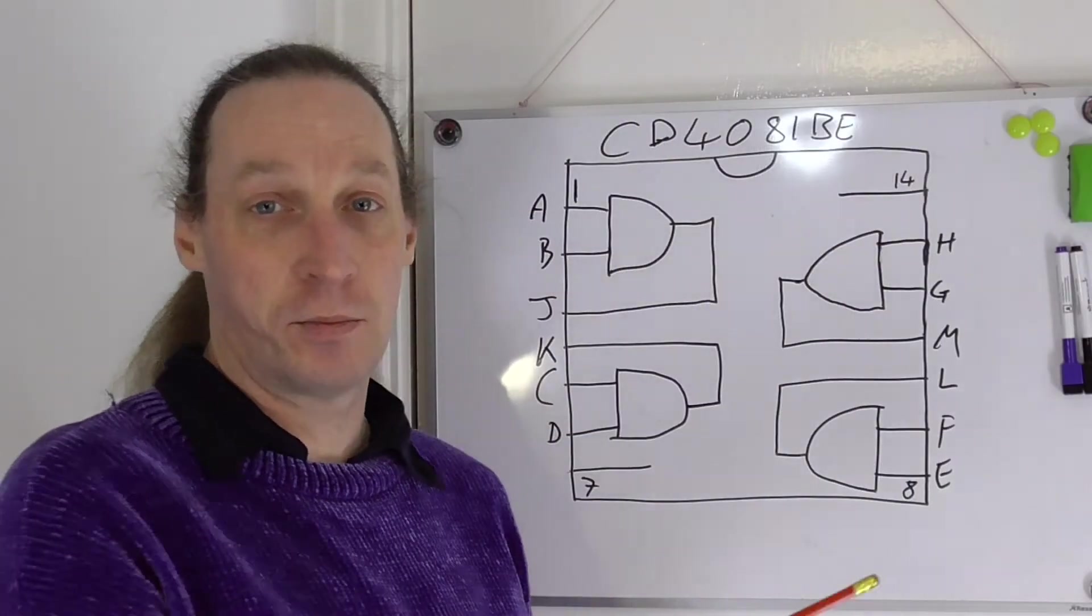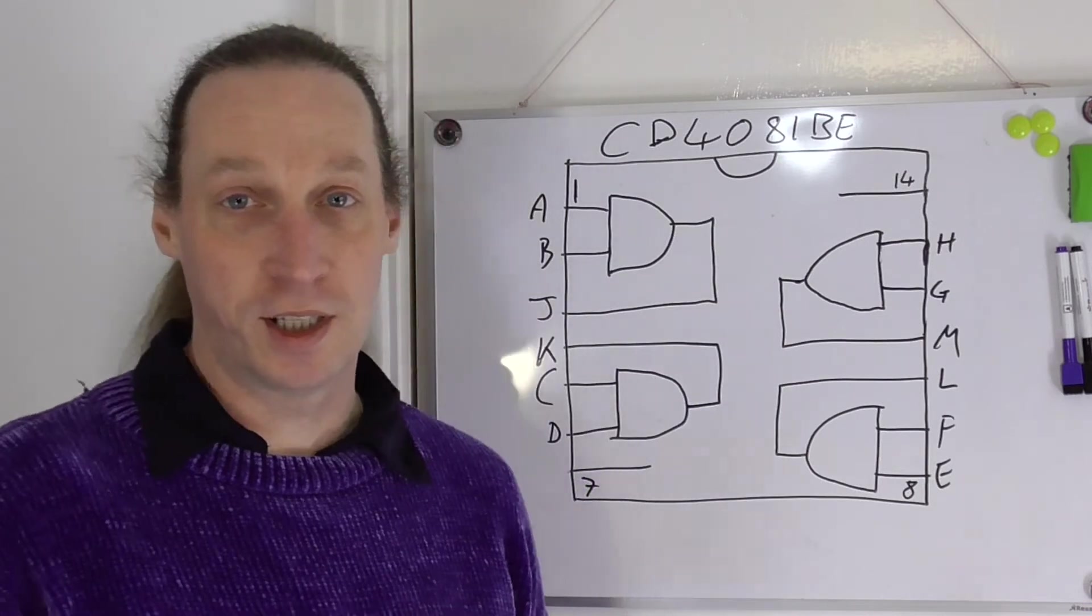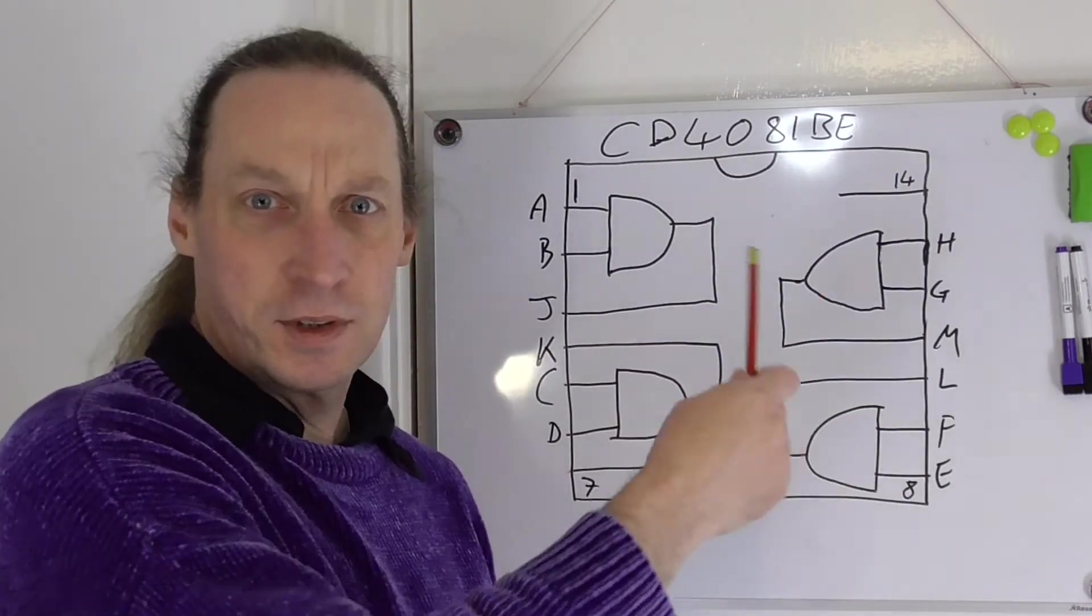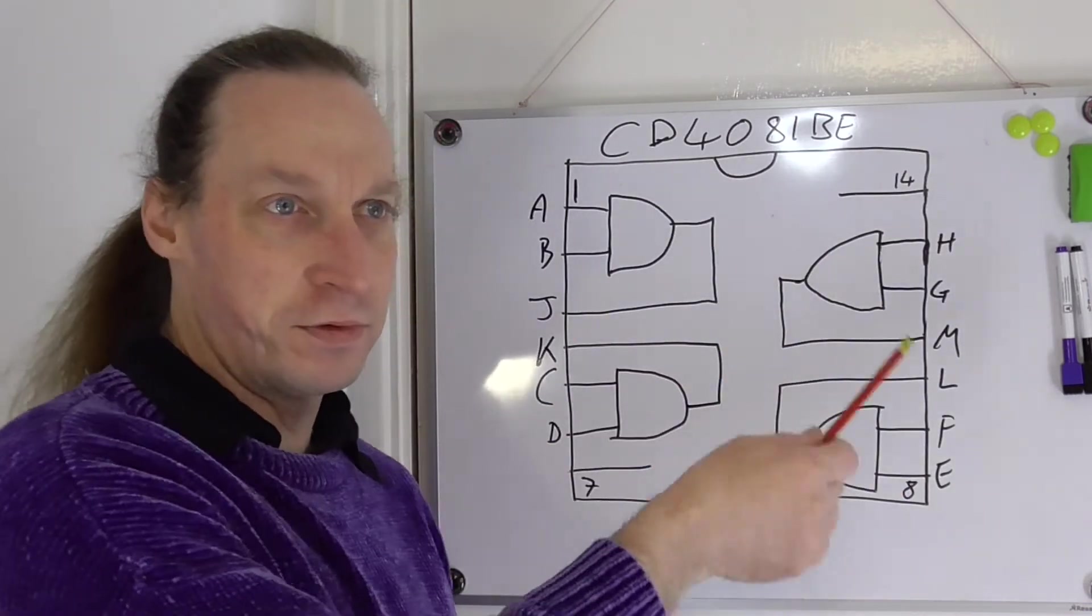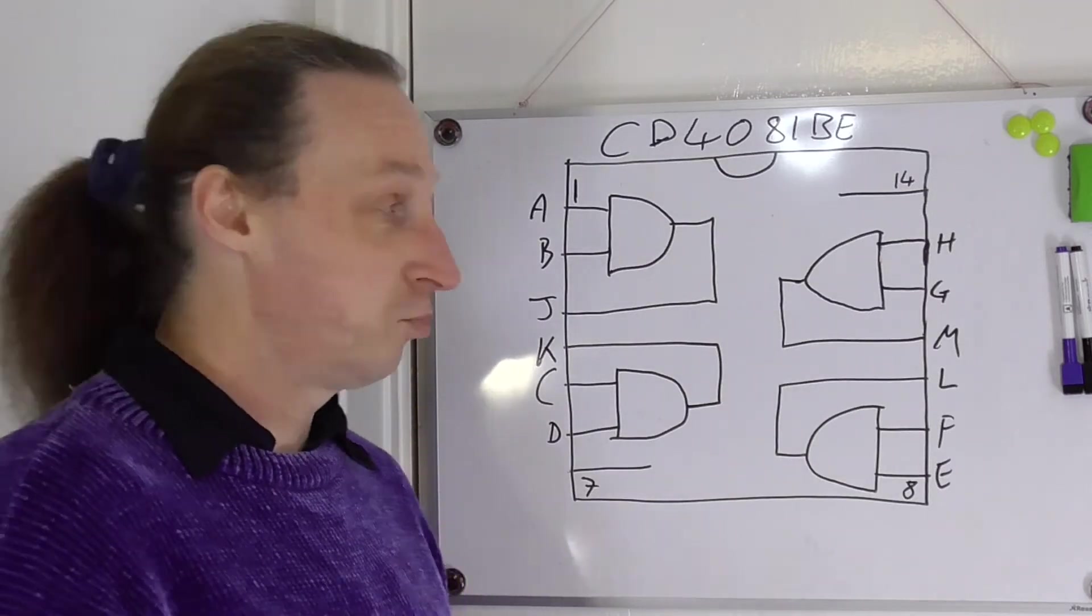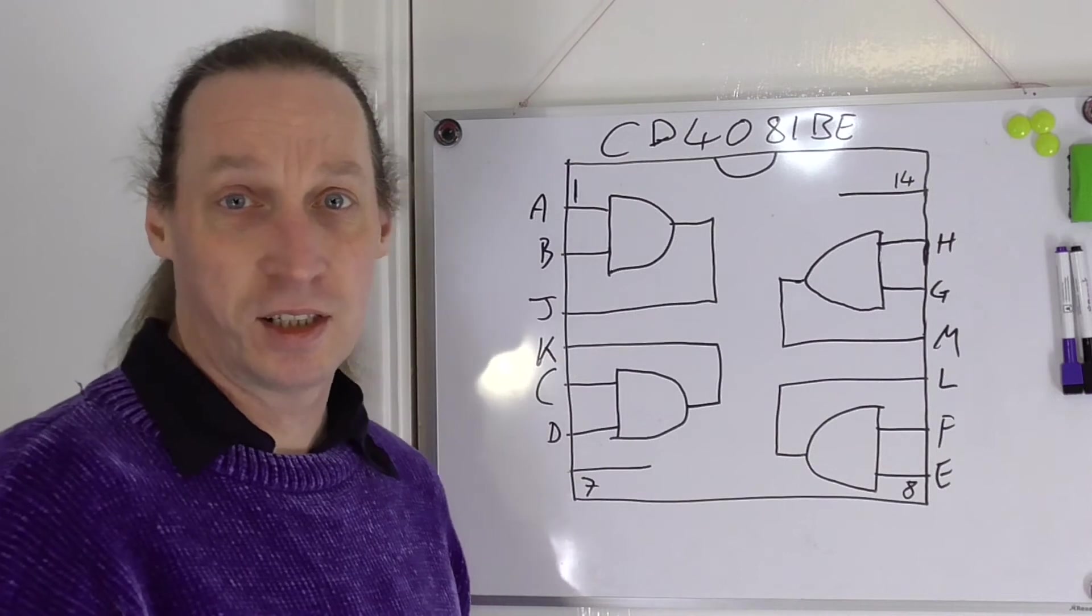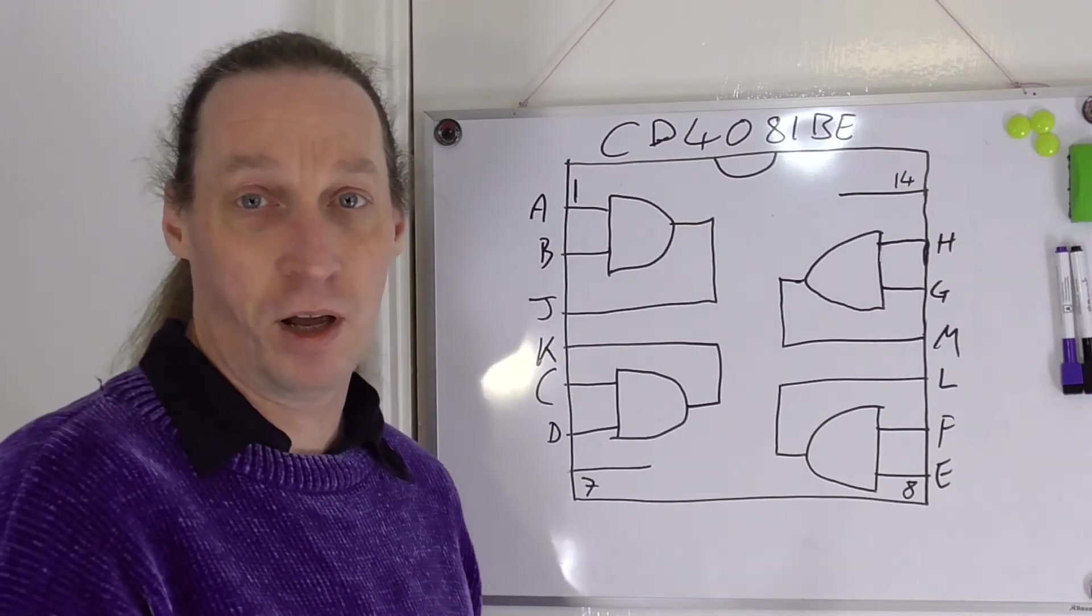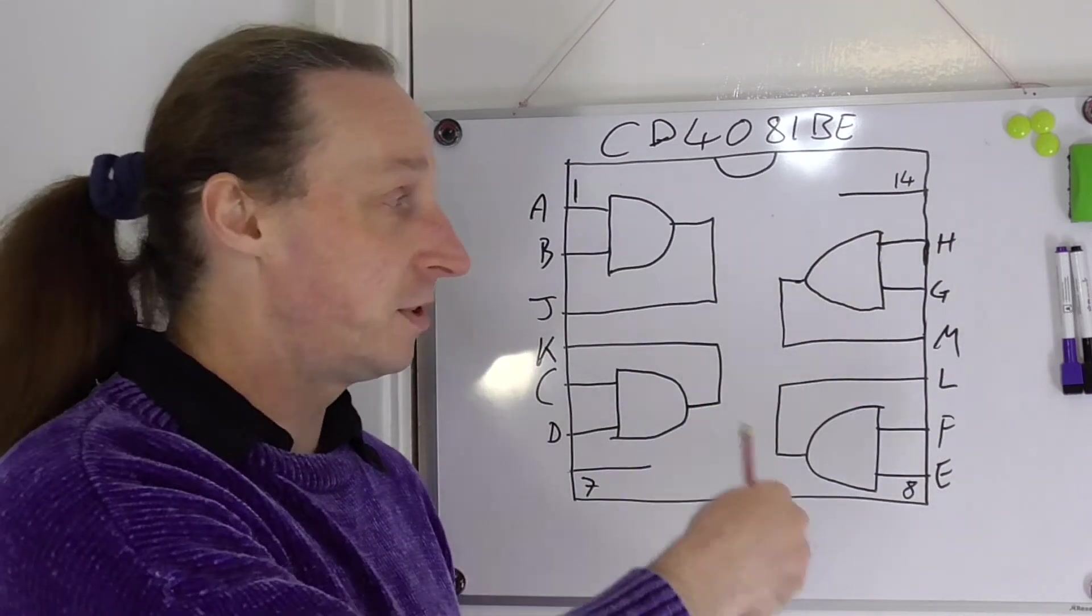OK, so I've got the basic diagram on the whiteboard. This is the schematic sort of outlay type of thing. As you can see on the datasheet, it gives you the outline of what the setup is.